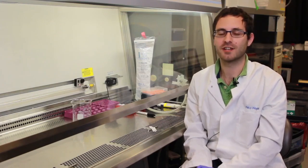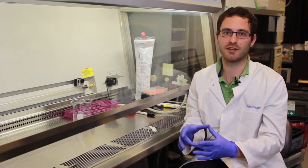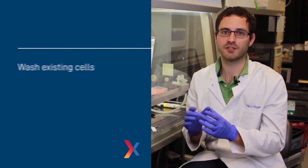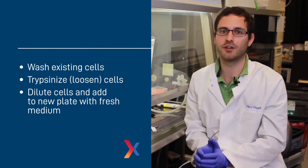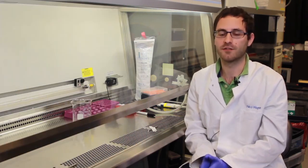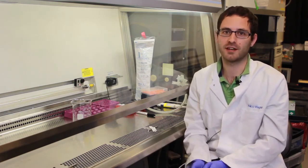And that concludes the basic cell passaging procedure. In summary what we've done is we took the original cells on our plate which were at about 95% confluency, washed those cells, trypsinized them, and diluted them at a 1 to 20 dilution onto a fresh plate. That gets the confluency down to about 5% and now they'll be good for about another week before they need to be passaged again.